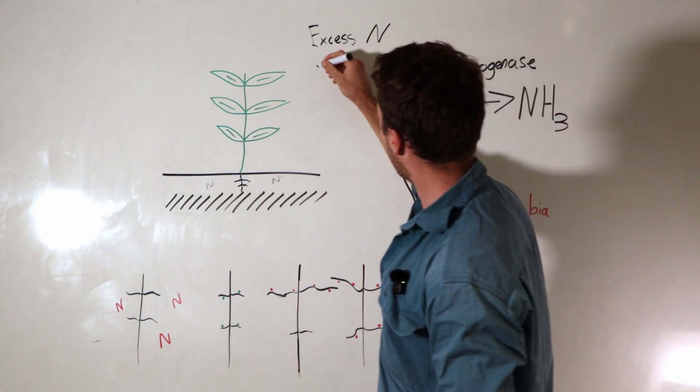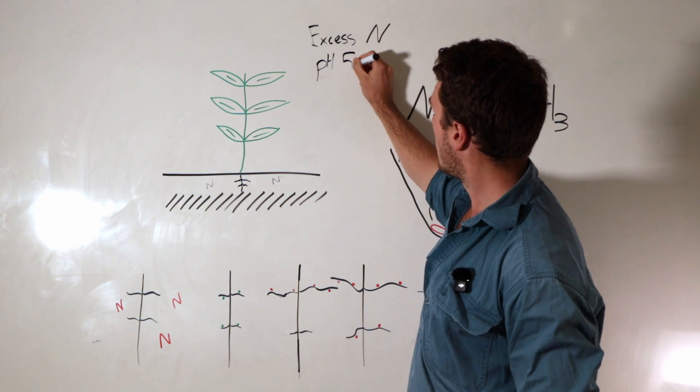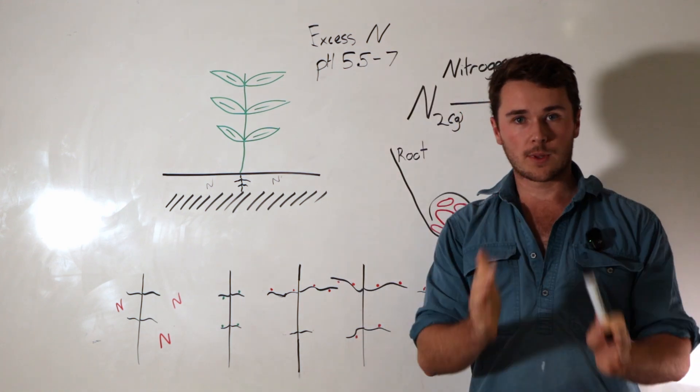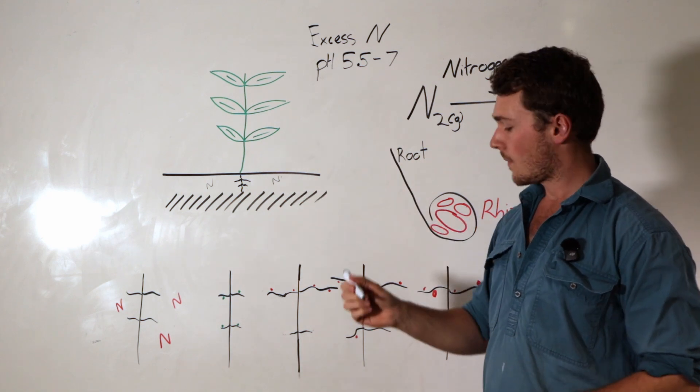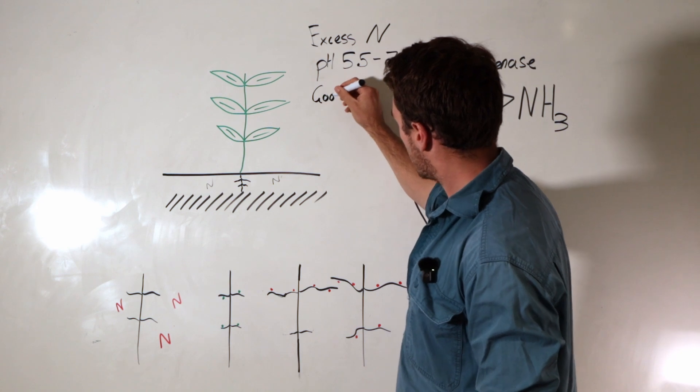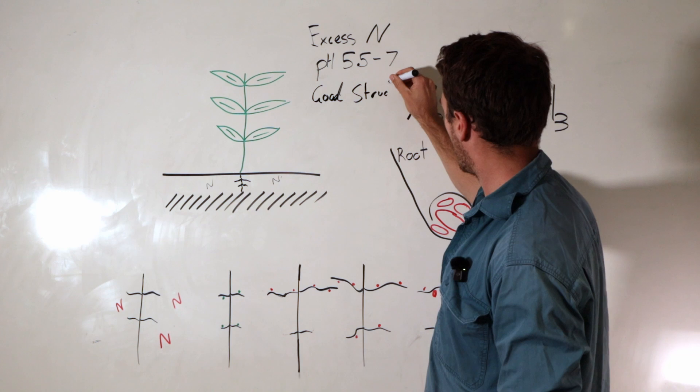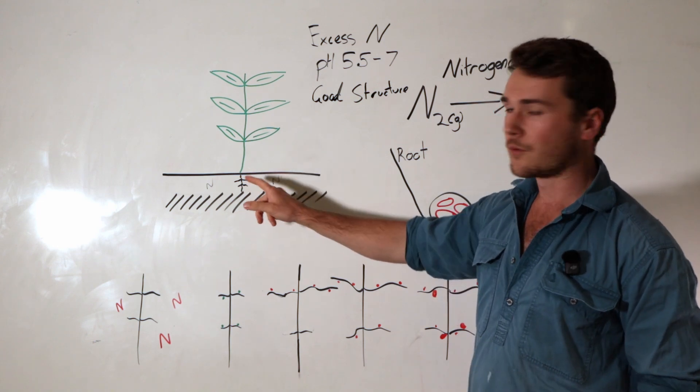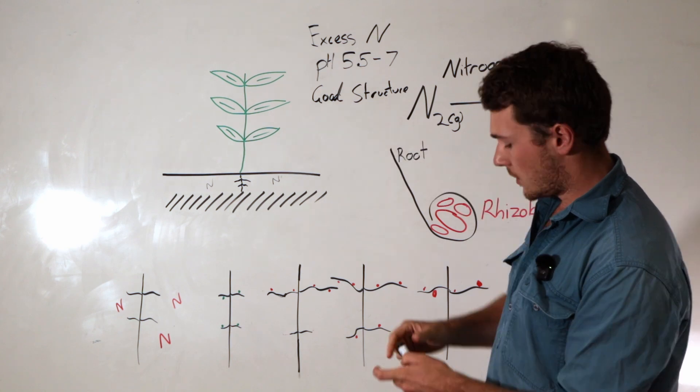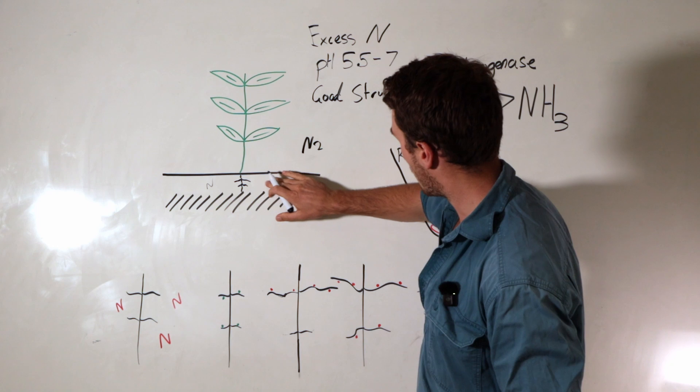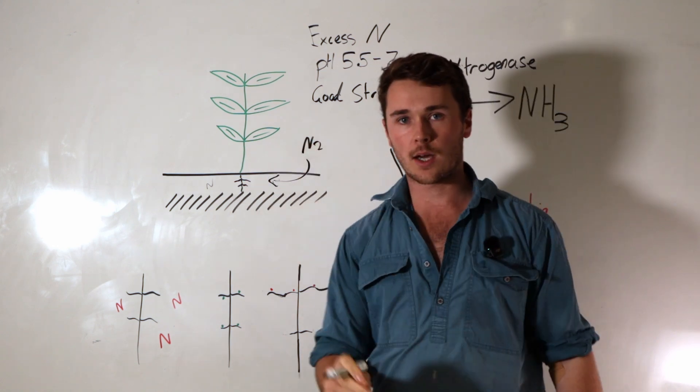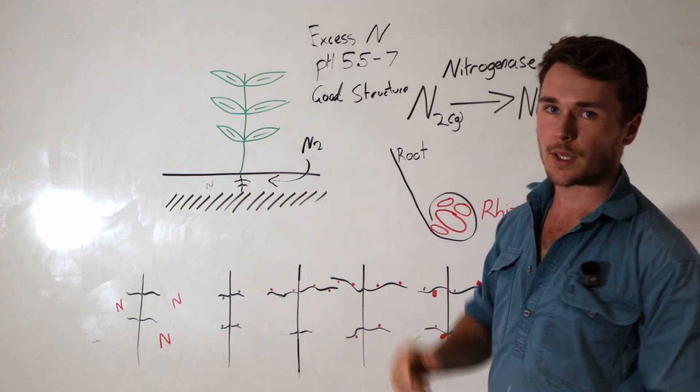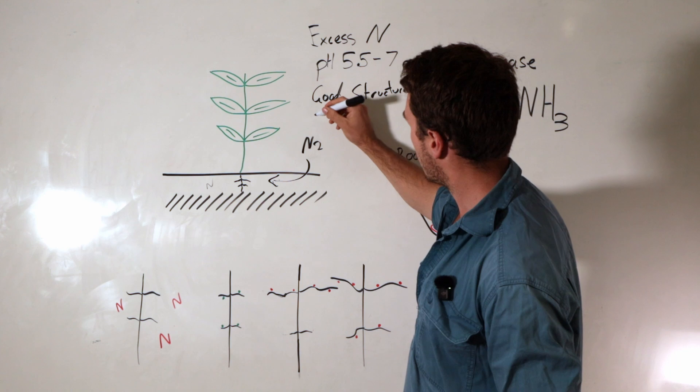The next one is we want to have a pH between 5.5 and 7. So making sure it's within that range is going to allow our plants to nodulate. And finally, we want good structure. Structure is very important, not just for nodulation, but for water infiltration, gas exchange and allowing for a really big root system. When we have good gas exchange, the nitrogen gas is able to flow into our soil and be taken up by the nodules. Let's just say this plant, because we have not excess nitrogen, it's in a good pH range. And the other thing is we have rhizobia present.